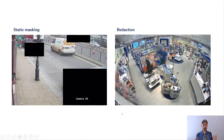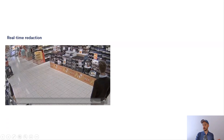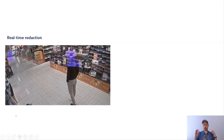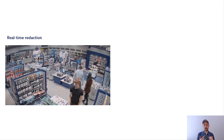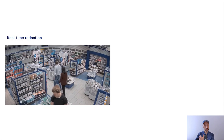Redaction is really doing this for people as they move through a scene. They are not identifiable anymore, but everything else is visible, and you can still see all the actions and everything that's happening. So let's take a look at two different kinds of redaction. First, there is real-time redaction, and this is really the case where you have an operator monitoring a scene.